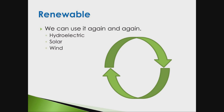There are two kinds of energy. One is renewable energy. We can use renewable energy again and again. Renewable energy comes from nature. Some examples of renewable energy are hydroelectric, solar, and wind.